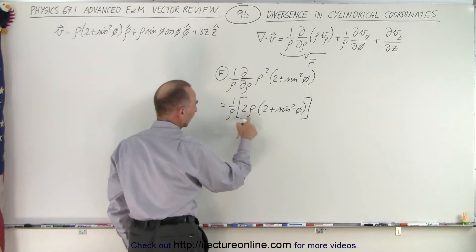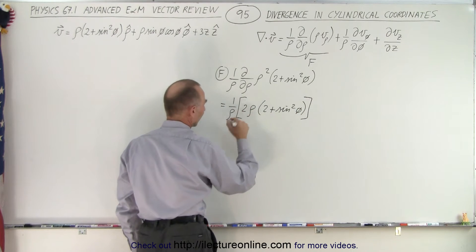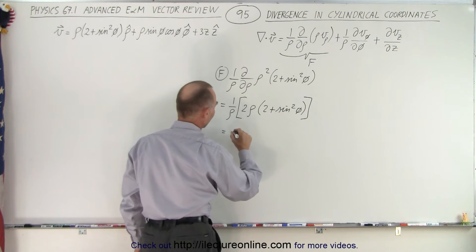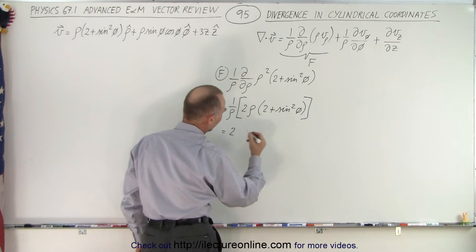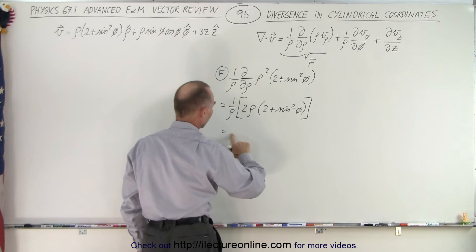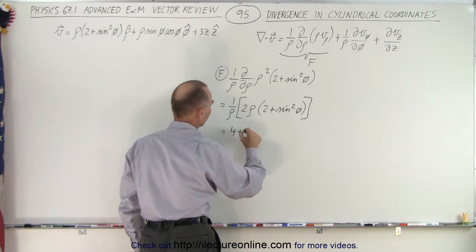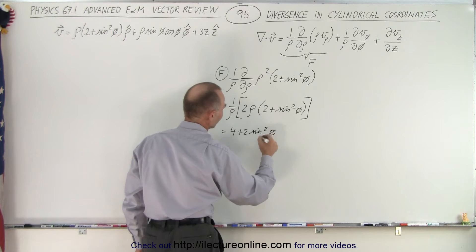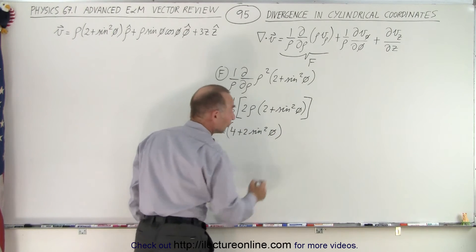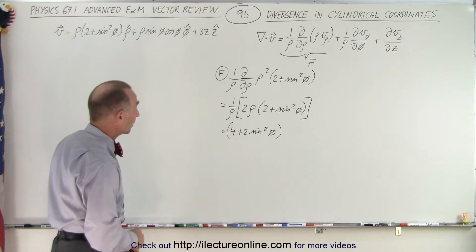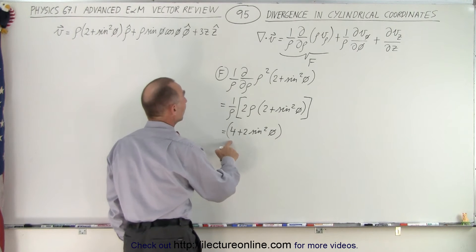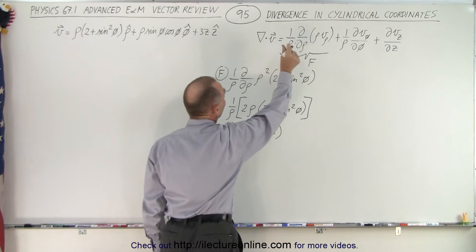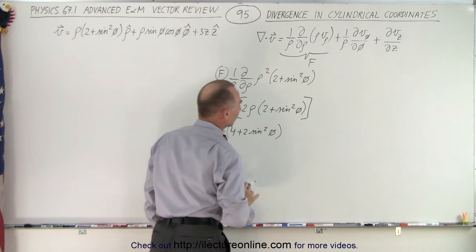This simply becomes 2 rho times the constant, so this is equal to 1 over rho times 2 rho — because that's the derivative of rho squared — times 2 plus sine squared of phi. The rho's cancel out, so we end up with 2 times that, which gives us 4 plus 2 times sine squared of phi. That's the first component.